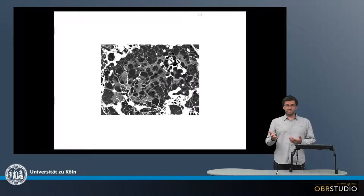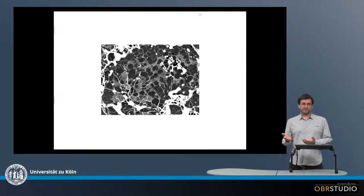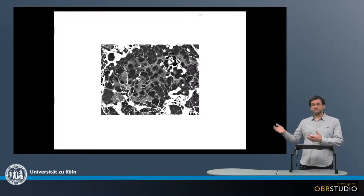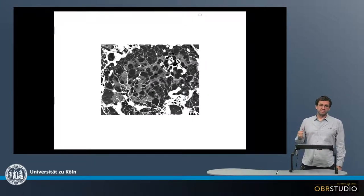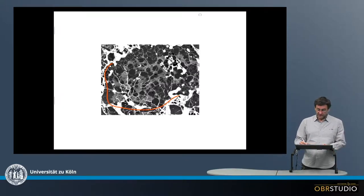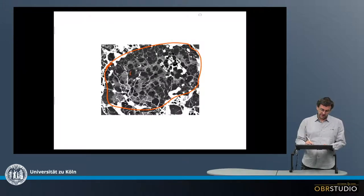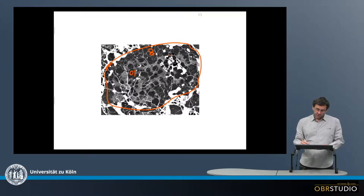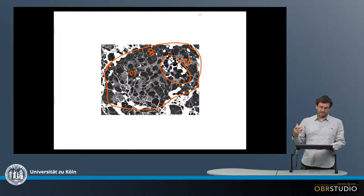Chondrules are tiny grains that formed in a protoplanetary disk during brief high temperature events. In these events the chondrules are molten and, upon cooling, crystallized. Here is one chondrule in a backscatter electron image. This is the rough outline of this chondrule and it contains as main minerals olivine and pyroxene — these are larger grains — also opaque phases like here, for example, which might be metal or sulphide.